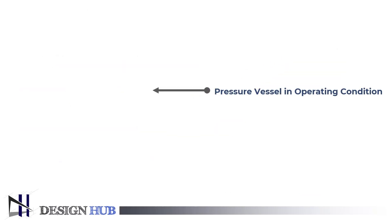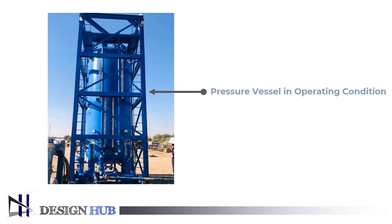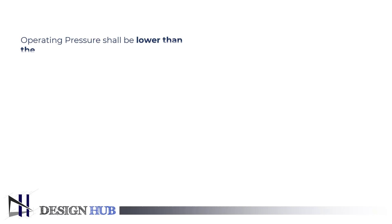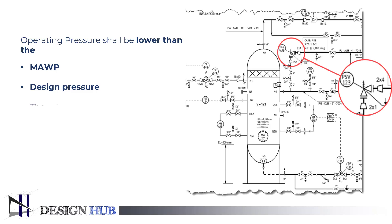You can see the figure of a pressure vessel in working condition. If a designer is determining the operating pressure, certain conditions apply which are mandatory to follow. The operating pressure will always be less than the maximum allowable working pressure. Also, the set pressure of any relieving device will be more than the operating pressure.